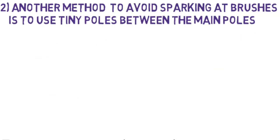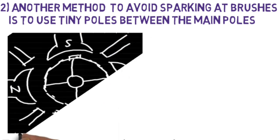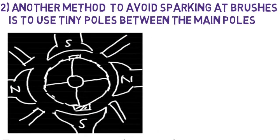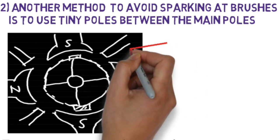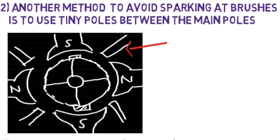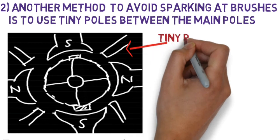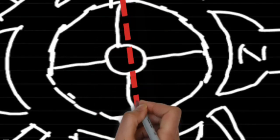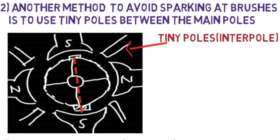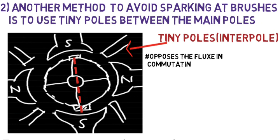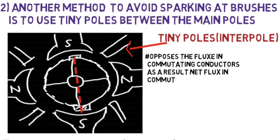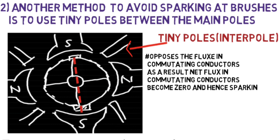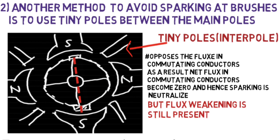The second remedy is to use interpoles — small poles placed between the main poles. Interpoles are used to avoid sparking in commutation. Sparking occurs due to flux present in commutating conductors at the MNA. These interpoles oppose the flux in the commutating wires, making the net flux in commutating conductors zero, thus neutralizing sparking. However, flux weakening is still present with this method.